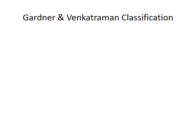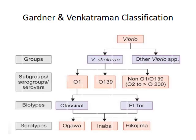The classification of Vibrio species was proposed by Gardiner and Venkatraman. Vibrio species are classified into two groups: one is Vibrio cholerae and the other is other Vibrio species. Vibrio cholerae is further divided into serogroups based on the O antigen — O1, O139, and a third group which is non-O1 or non-O139.